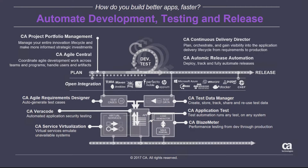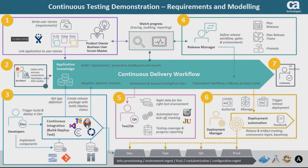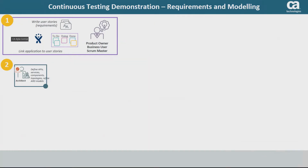We're going to break this down into component parts. This is the whole continuous delivery pipeline and for this video we're going to focus on this section here — the creation of projects, how that's linked to Agile Central to manage user stories, define your requirements, and how we can then model those requirements.